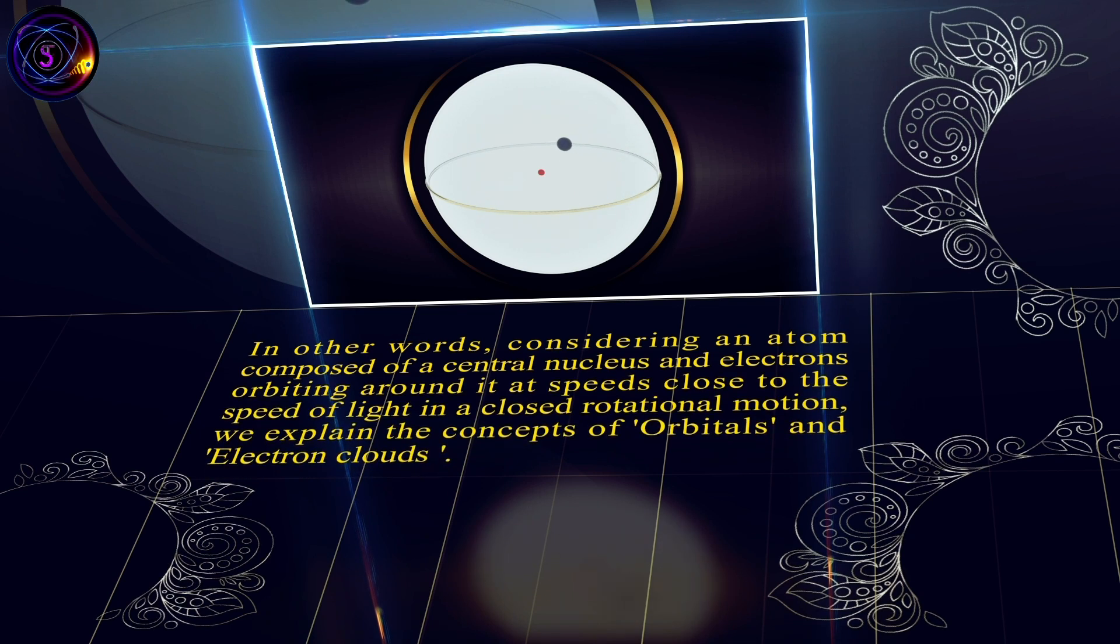In other words, considering an atom composed of a central nucleus and electrons orbiting around it at speeds close to the speed of light in a closed rotational motion, we explain the concepts of orbitals and electron clouds.